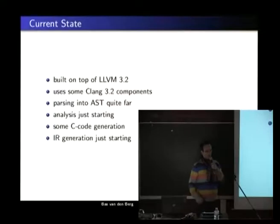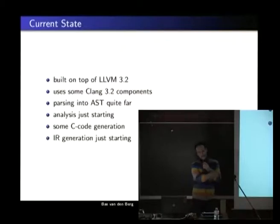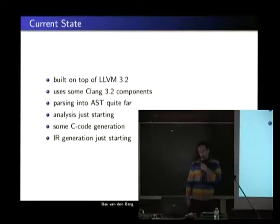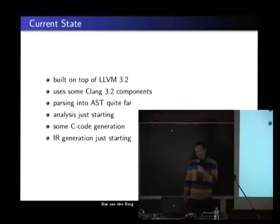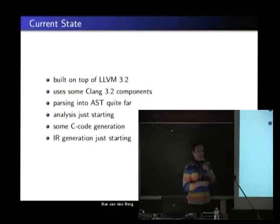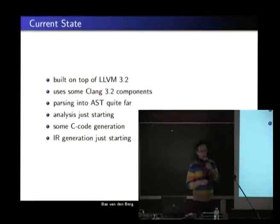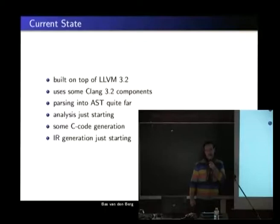Currently parsing into the AST — the abstract syntax tree — is quite far. We understand what the language wants to do: this is a function call, this is a return statement, and so on. The analysis part is just starting, so it will work as long as you don't make any mistakes. But if you do, we don't analyze it — we just generate faulty code. Another thing: because there is such a huge code base, I wanted to be able to generate C code from C2 files, and that's quite far — since we don't need to analyze, we can just convert it and let the C compiler sort it out.